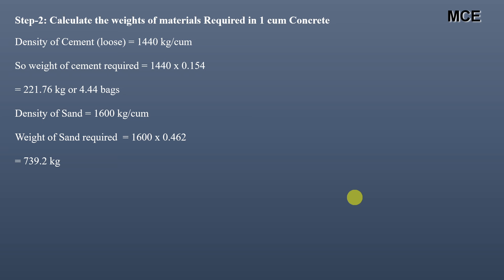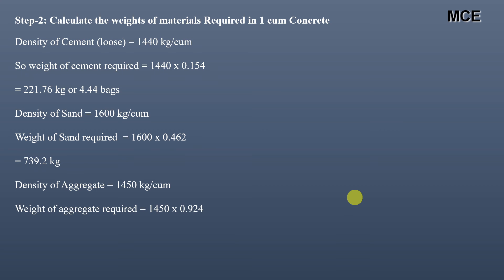Density of aggregate is 1450 kg per cubic meter. Weight of aggregate = 1450 × 0.924 = 1339.8 kg of aggregates required to make 1 cubic meter of wet concrete.